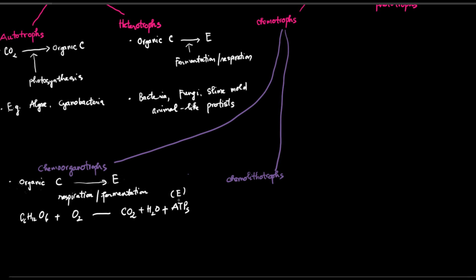Most importantly, that process generates lots of ATP, or energy. Many microorganisms are chemo-organotrophic — again, most bacteria, fungi, and slime molds. We can see that chemo-organotrophs are actually heterotrophic microorganisms because they need to rely on an existing organic carbon source for energy.